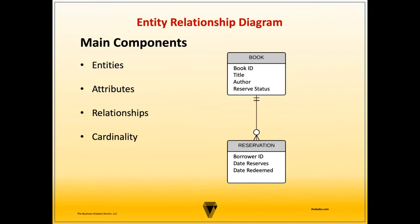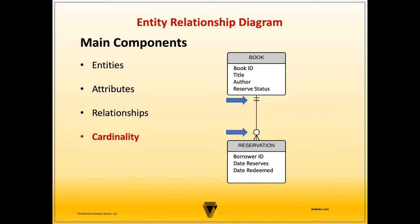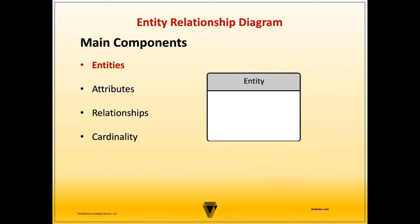Now let's look at the main components of the entity relationship diagram. This includes entities, attributes, relationships, and cardinality. An entity represents nouns that can be physical, organizational, abstract, or an event. In most cases, this would be a person, object, or a concept. Entities are the key components of a domain that the business wants to capture, store, or produce information for.